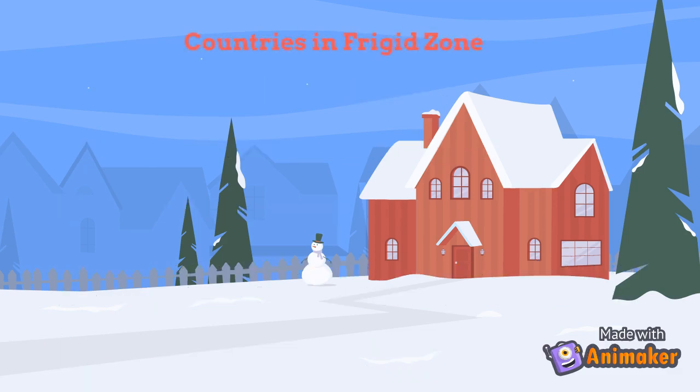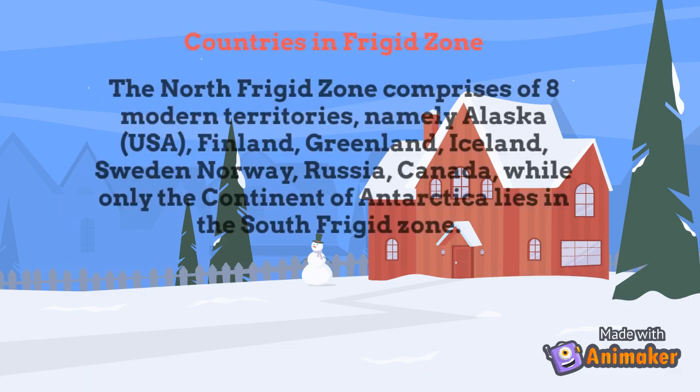Countries in the frigid zone: the north frigid zone comprises eight modern territories and countries, namely Alaska, USA, Finland, Greenland, Iceland, Sweden-Norway, Russia, and Canada, while only the continent of Antarctica lies in the south frigid zone.